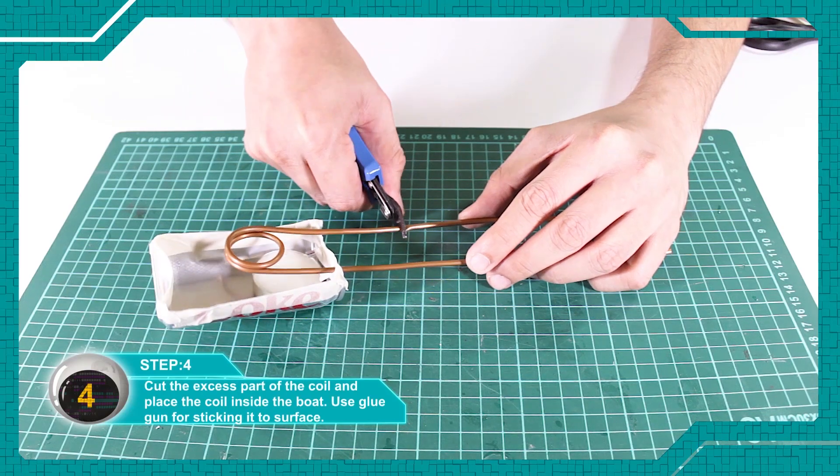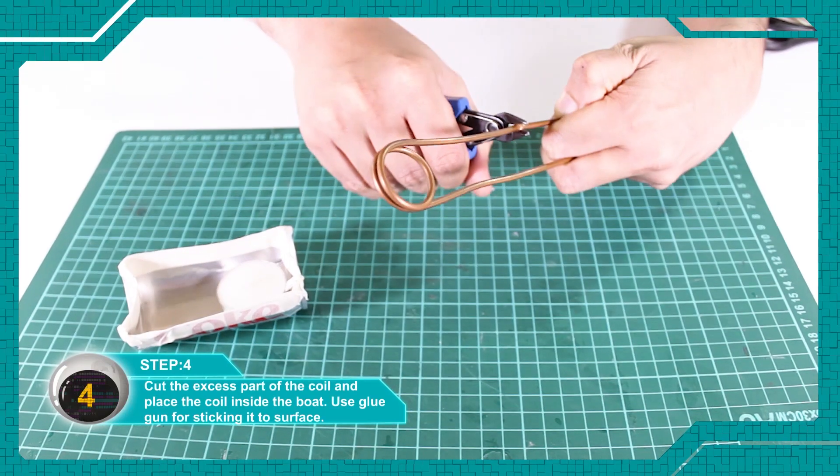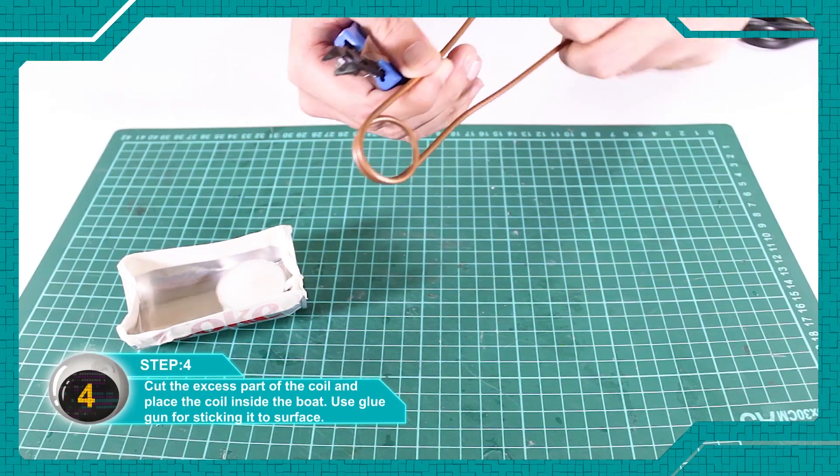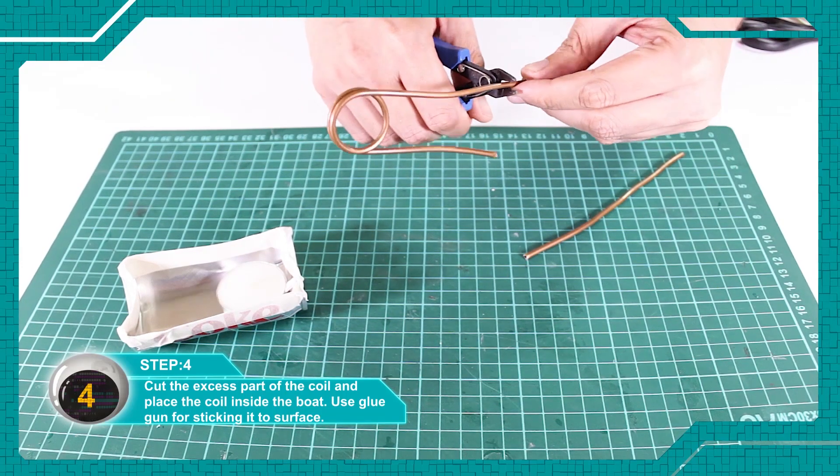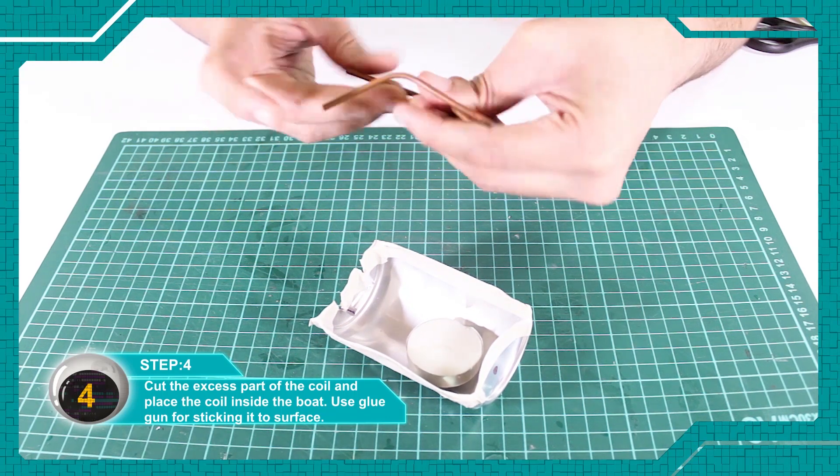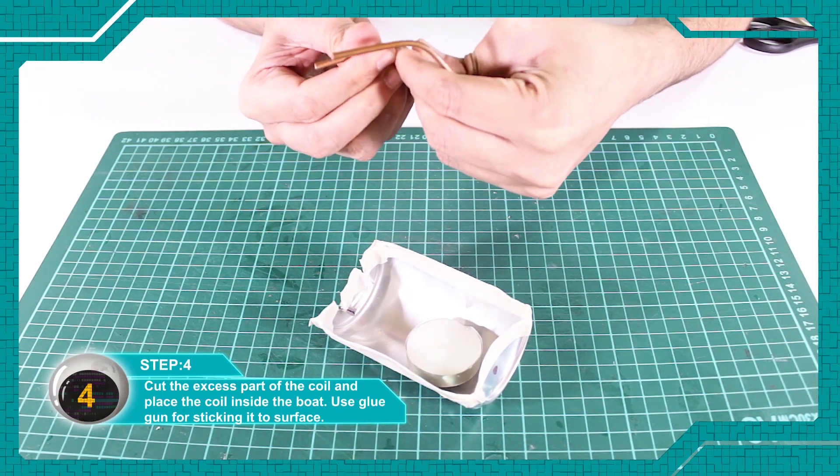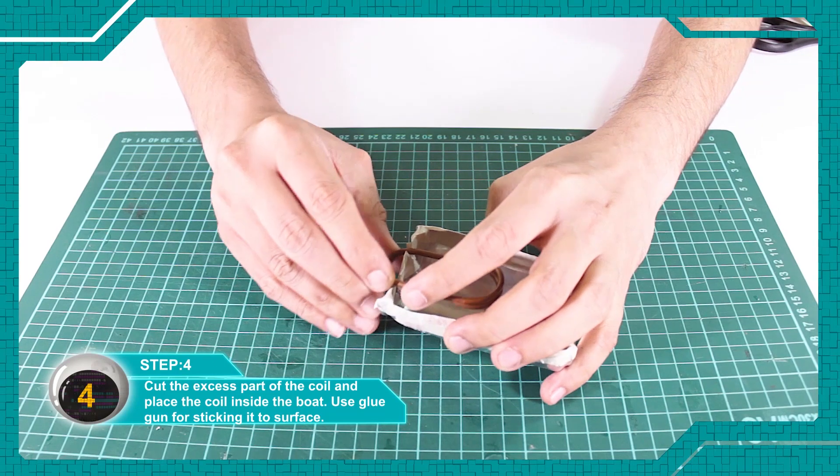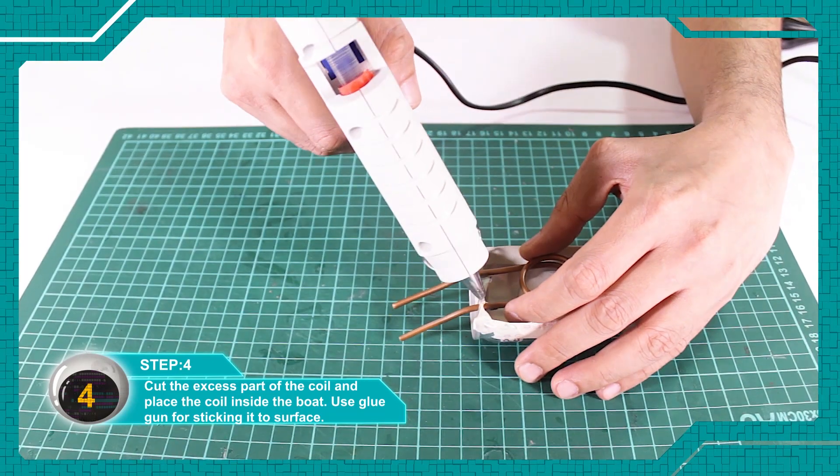Cut the excess part of the coil and place the coil inside the boat. Now use a glue gun to stick it in place.